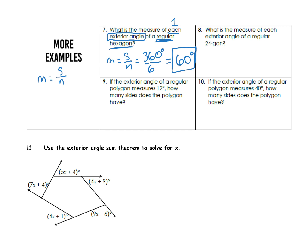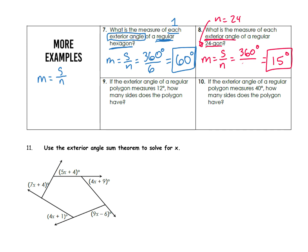Let's do the same thing: what is the measure of each exterior angle of a regular 24-gon? The measure of an angle is equal to the sum divided by the number of sides. We're talking about exterior angles, so the exterior angle sum is 360 degrees. There are 24 sides, so n equals 24. We take 360 and divide by 24, and we find that the measure of each exterior angle of a regular 24-gon is 15 degrees.